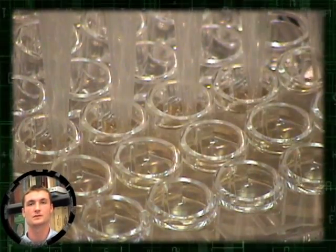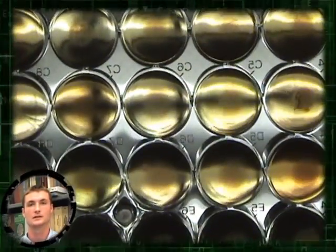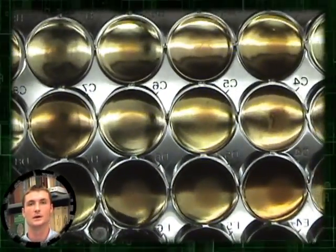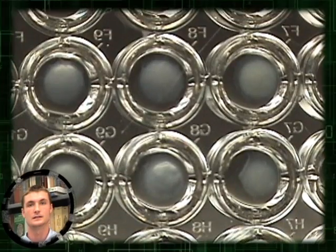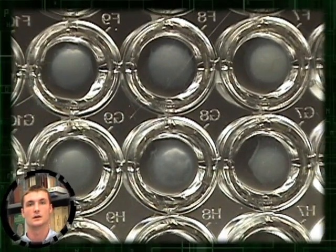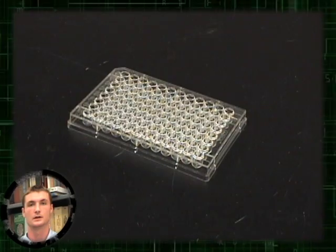Samples are then mixed with alcohol to help precipitate the DNA. Centrifuging the samples forces the DNA to the bottom of the tube or plate. The alcohol is poured off, leaving DNA and residual alcohol, which is evaporated by letting the sample dry in air for a brief period.